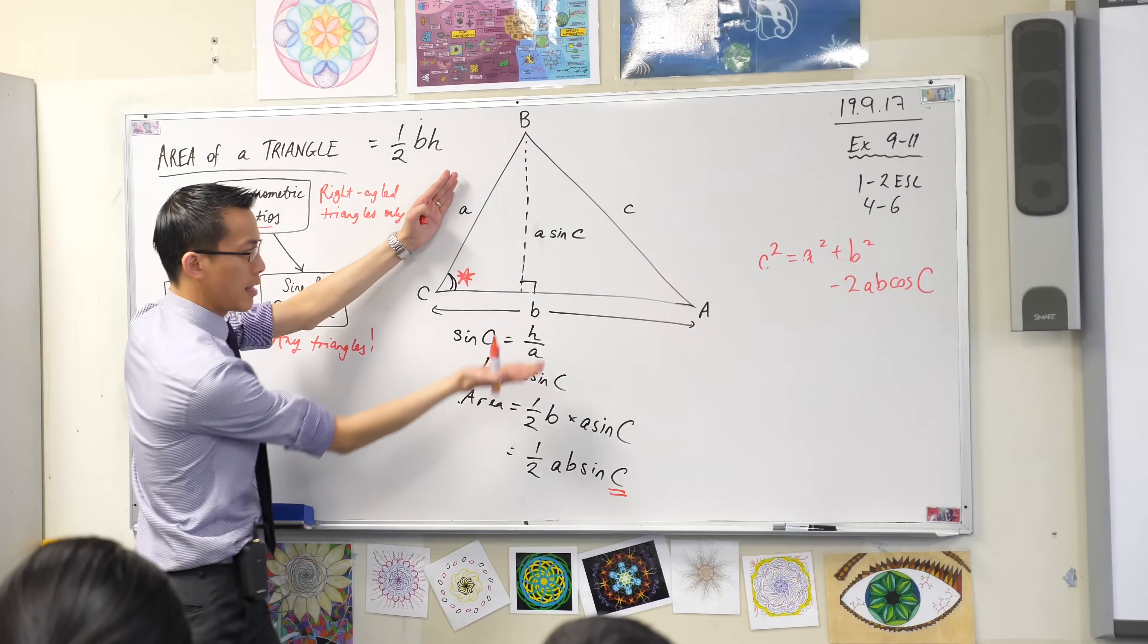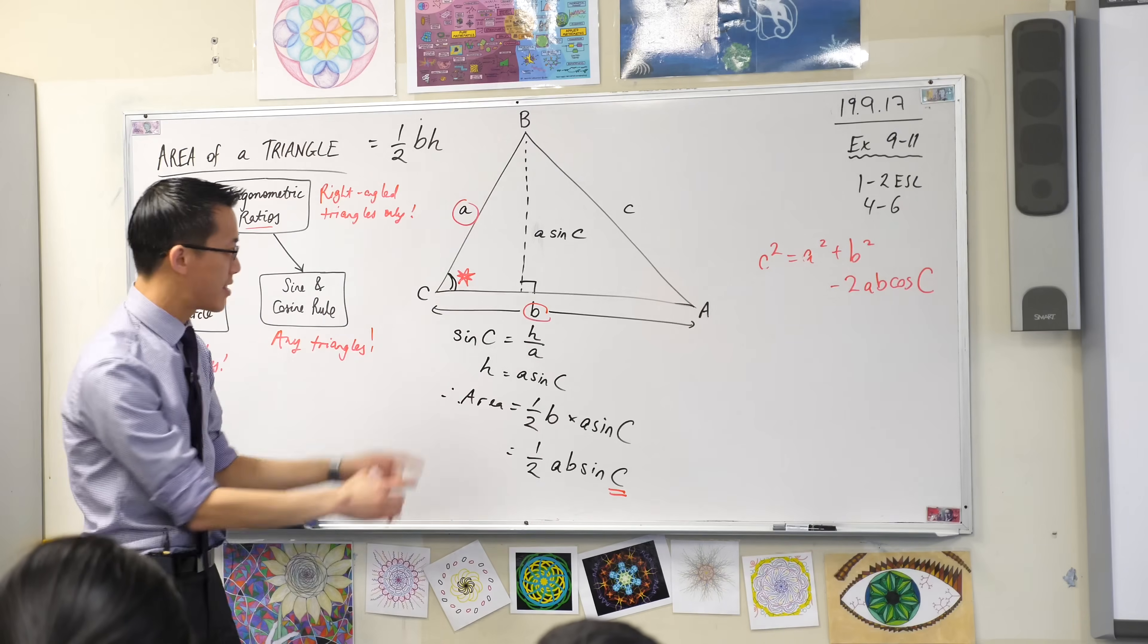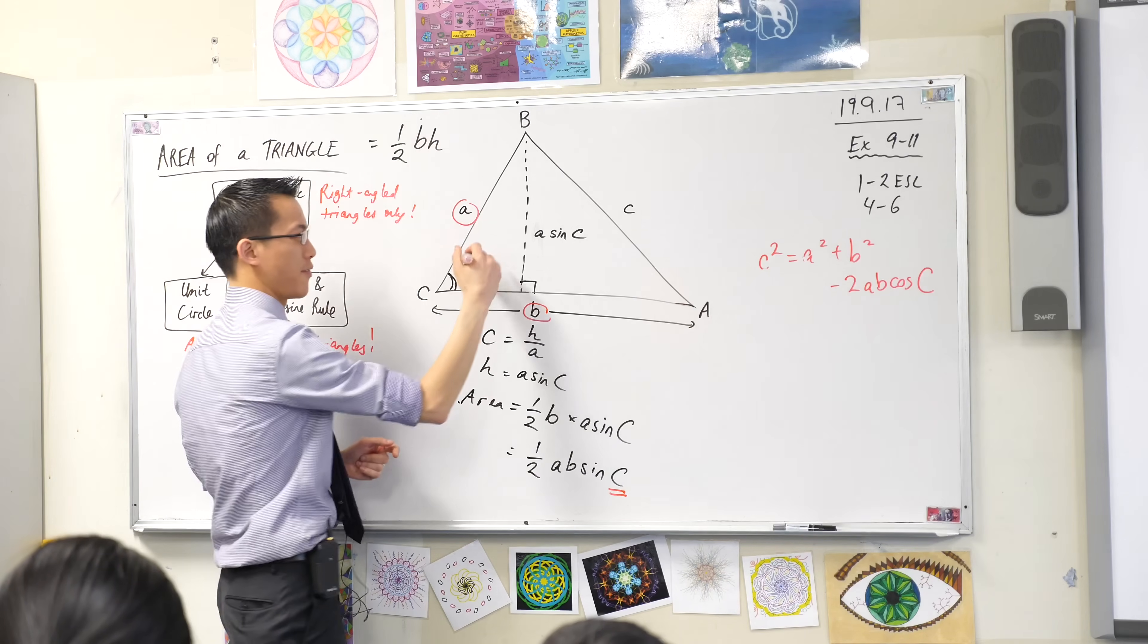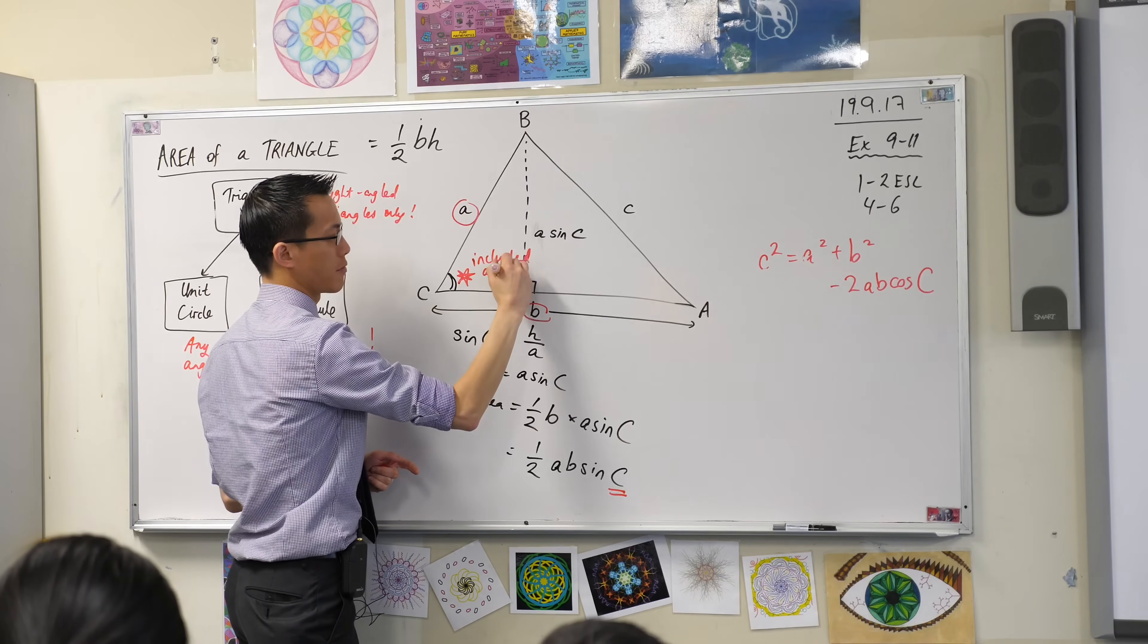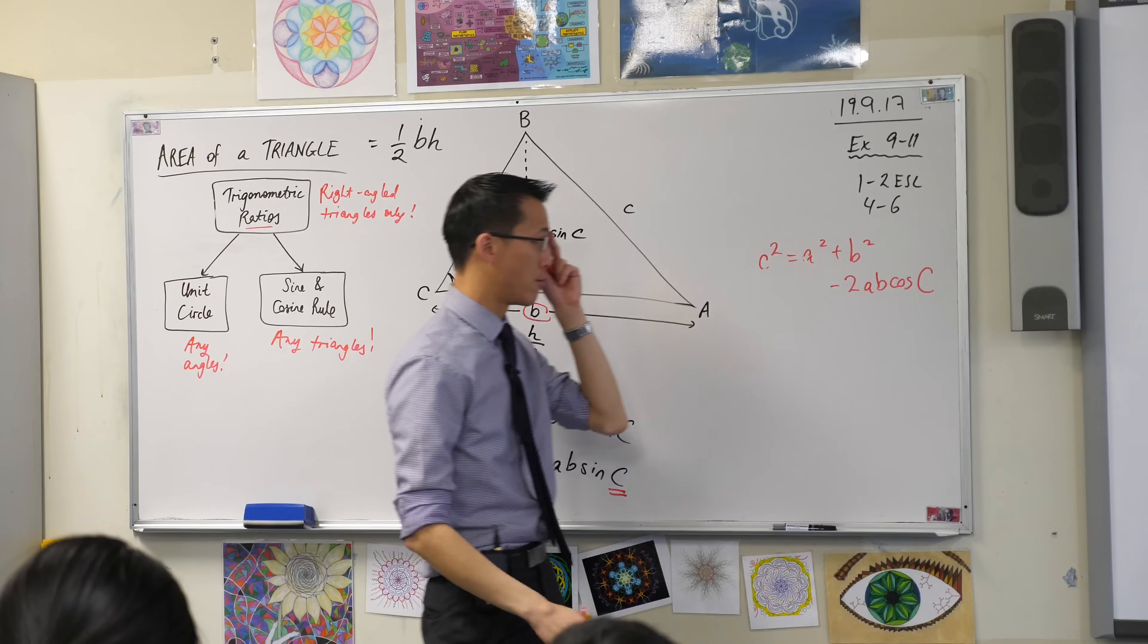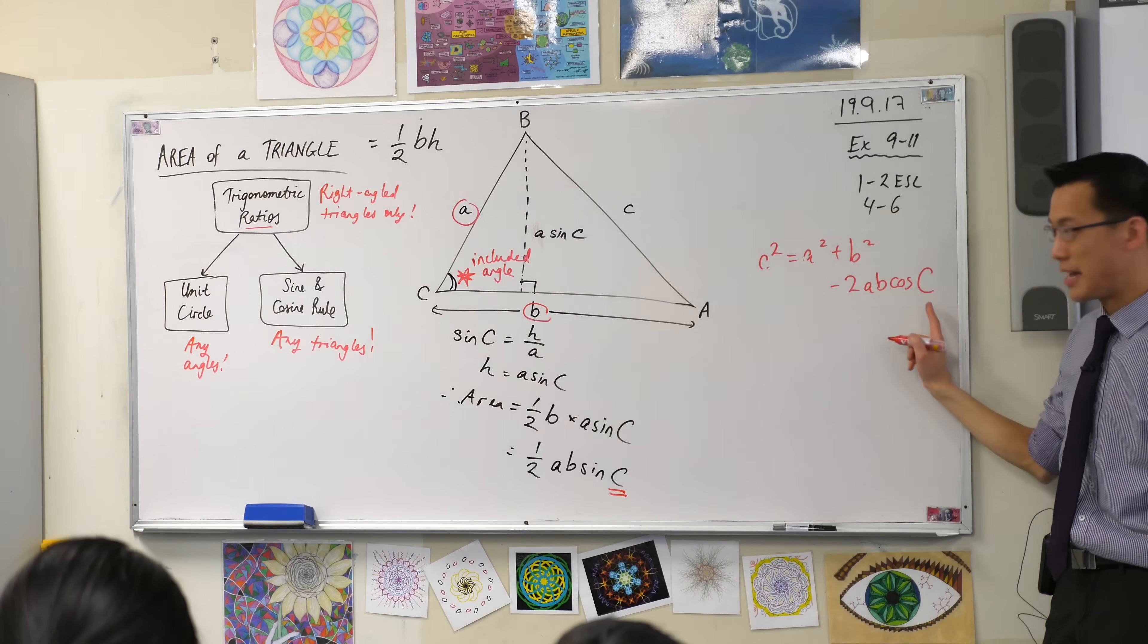Here's A and here's B. So the angle you need is the middle angle, the specific name for that, the fancy name is the included angle. So just like with the cosine rule, C is the included angle between A and B.